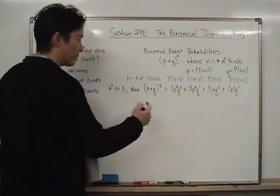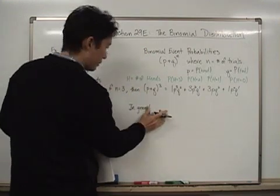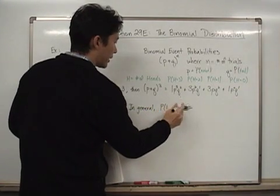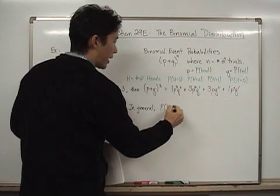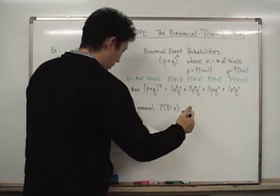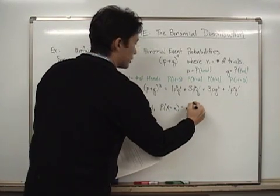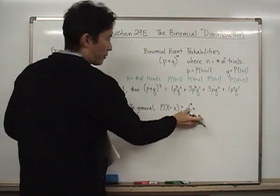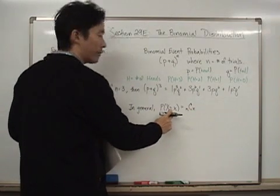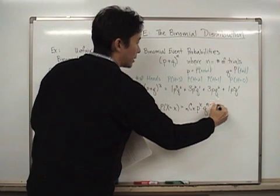Now let's generalize then what that formula is in general. We say that the probability that for any discrete random variable X equaling x, or little x in this case, we can say that this is really going to be equal to n choose x. So in other words, how many times are you actually performing the experiment, choose how many times you're actually getting that result, multiplying it by p to the x and q to the n minus x.